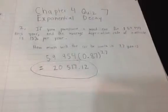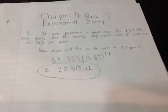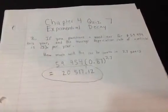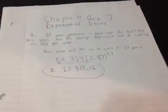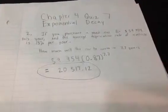How you do it is, you write $59,954 multiplied by 0.87. It's not 13%, it's 0.87. Because if the average depreciation rate is 13%,